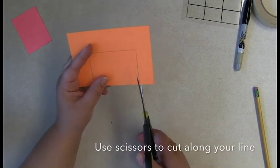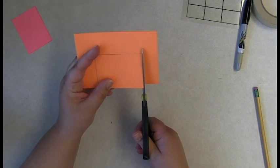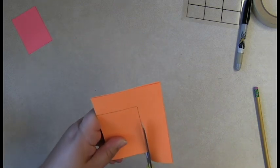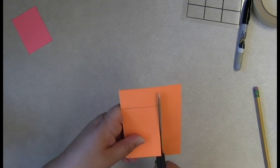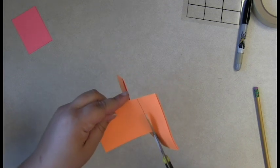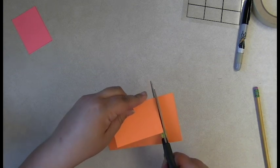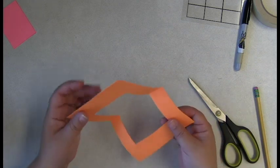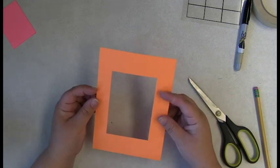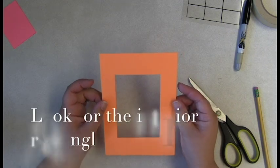Take your scissors, cut along the edge that you just made. Open up your 5x7 sheet of paper and you're going to see an interior rectangle.